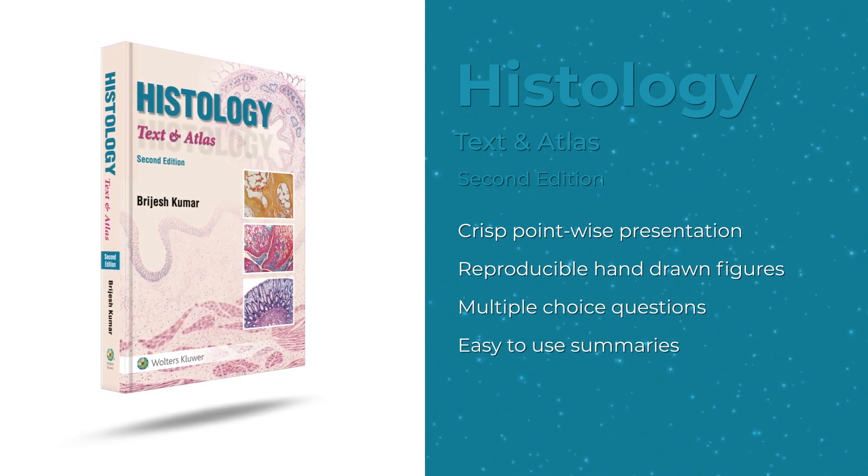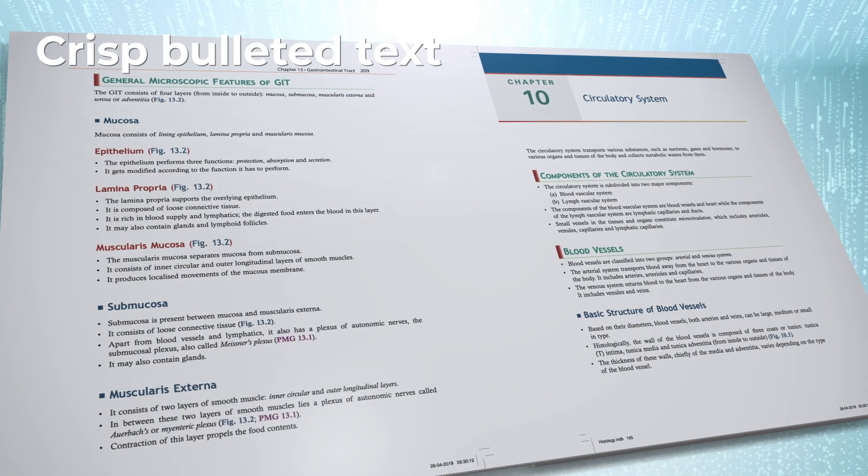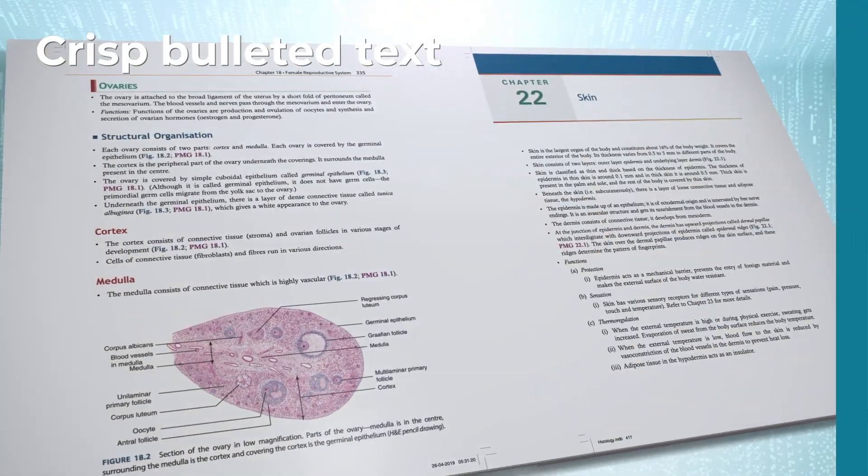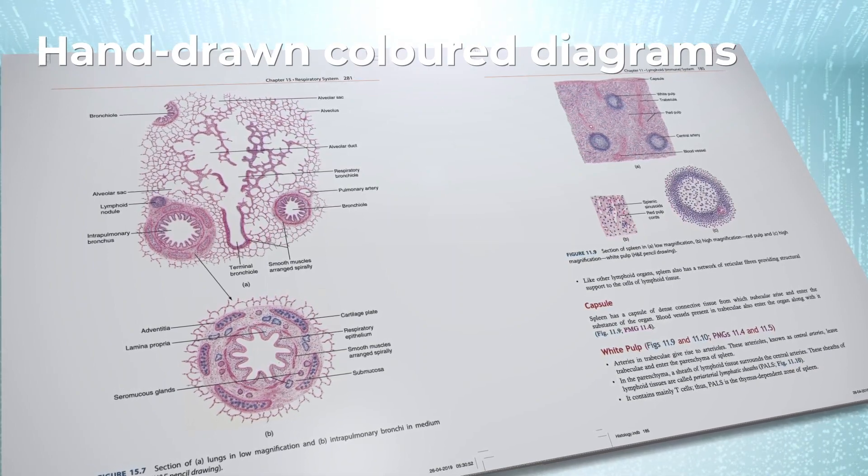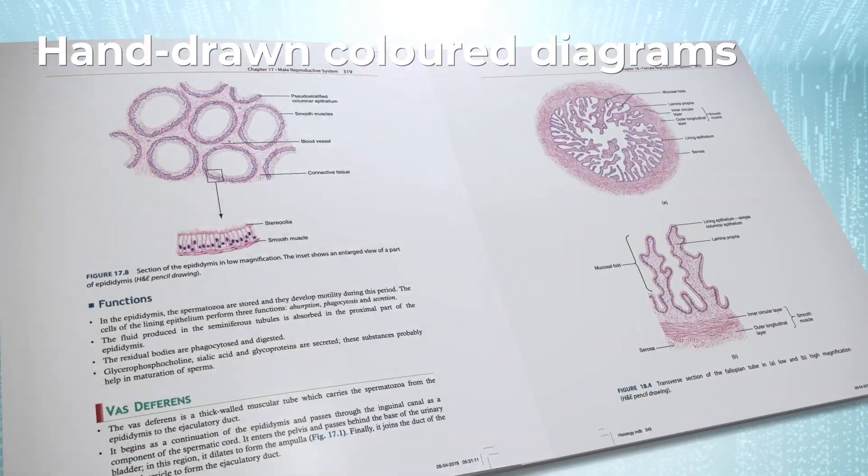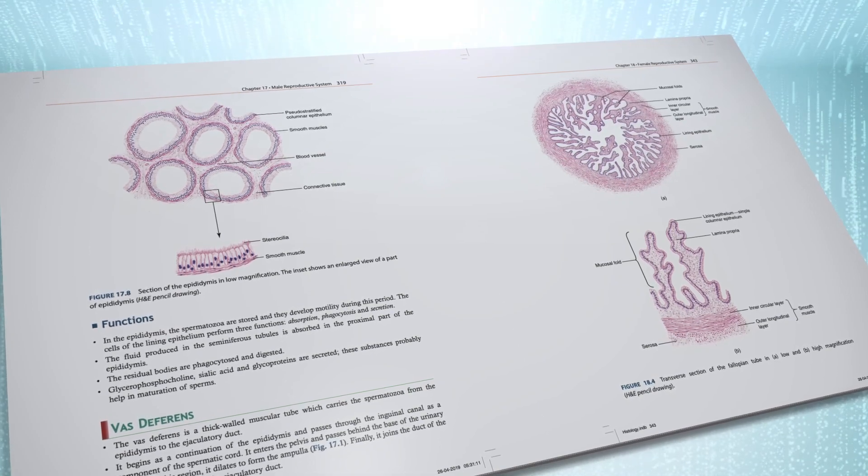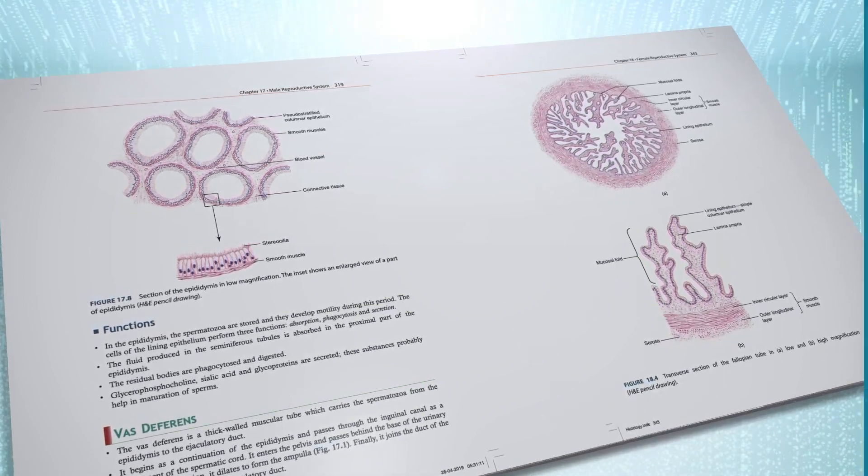The features of second edition include crisp bulleted text for quick and easy understanding. Well-labeled, accurate, hand-drawn color diagrams of histological slides as seen in low and high magnifications enable quick reproduction in the practicals.